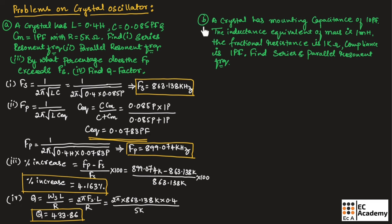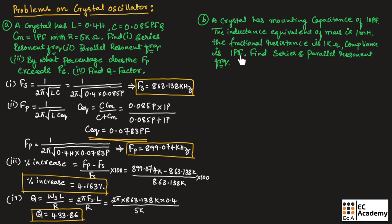Now let us consider the second problem. A crystal has mounting capacitance Cm = 10 picofarad. The inductance equivalent of mass is L = 1 millihenry. The fractional resistance R = 1 kilo ohm, and compliance C = 1 picofarad. Find the series and parallel resonant frequency.